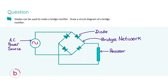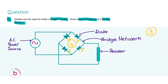In part two we are told that diodes can be used to make a bridge rectifier, and we're to draw a circuit diagram of one. For full marks you need a correct arrangement — that earns three marks — and the other four marks come from showing four diodes in the bridge network circuit, along with a resistor and an AC power source configured correctly.